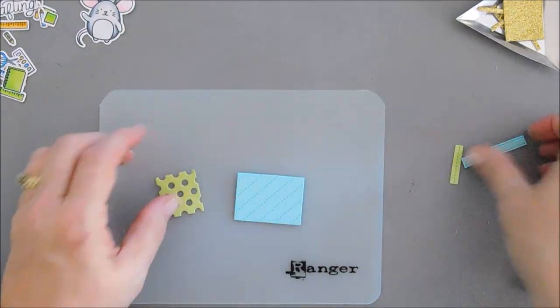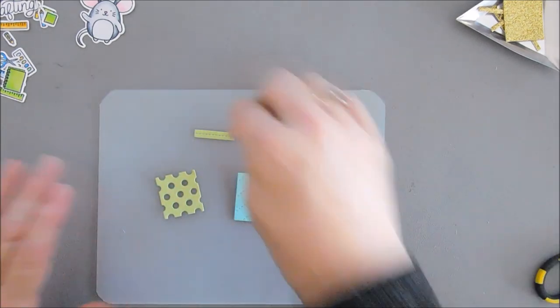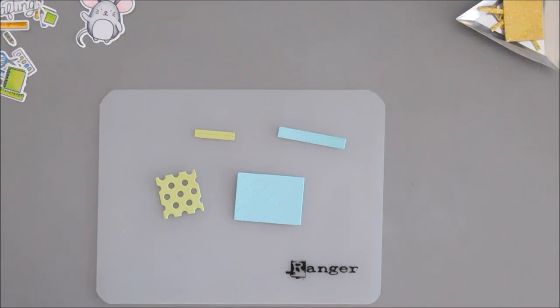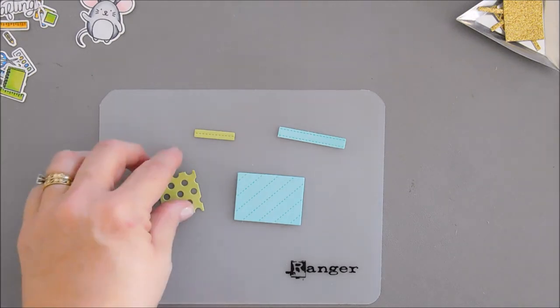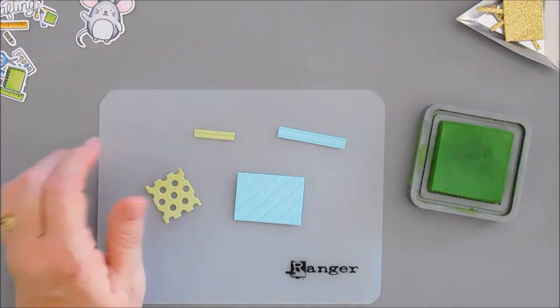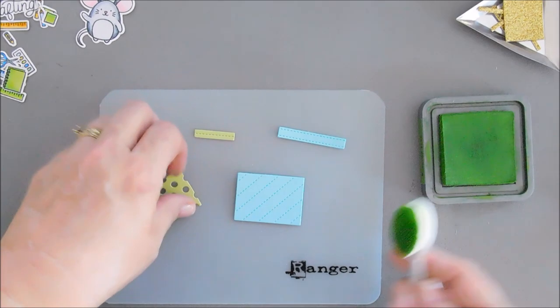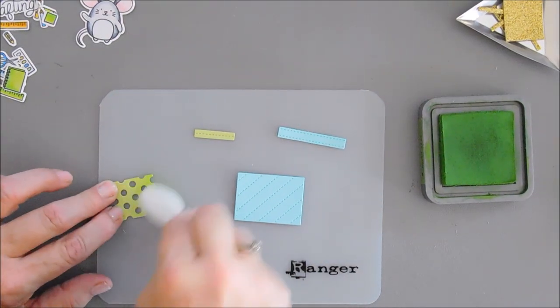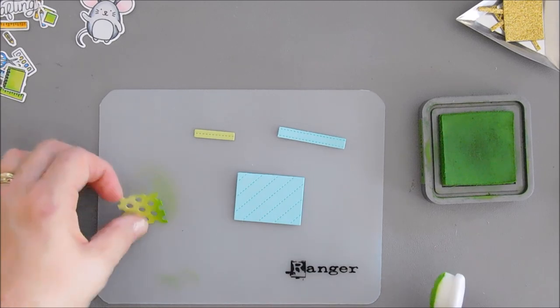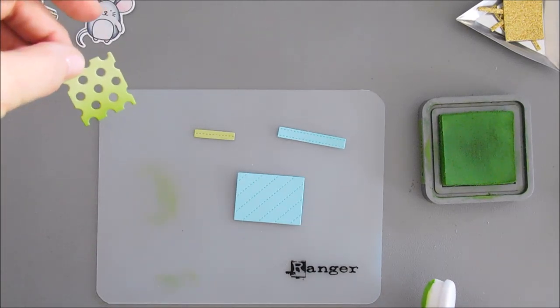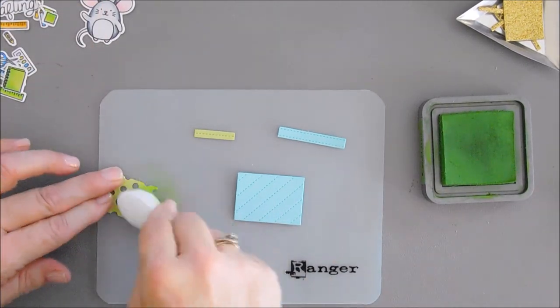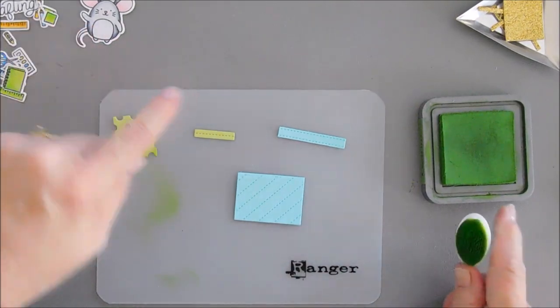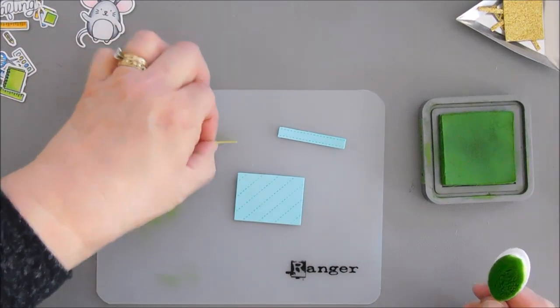But before we add our little mouse, we're going to ink blend these pieces here. It's just going to give our presence a little bit of definition. I'm going to be using some oxidings, and for our green, I'm using Mowed Lawn. And I'm just going to bring in my blending brush and add a little bit of color to the bottom and fade out. I've been loving this lately. And I love the green. The Mowed Lawn on a light green cardstock is just lovely.